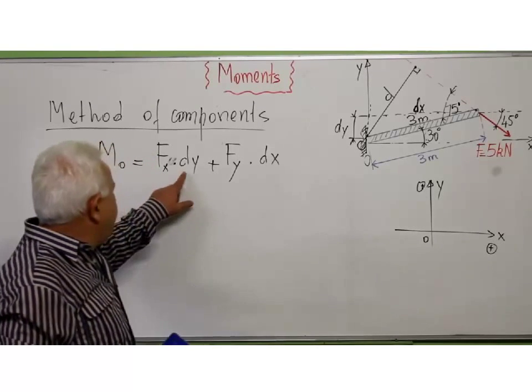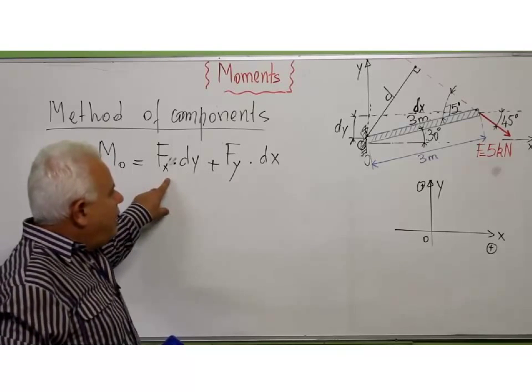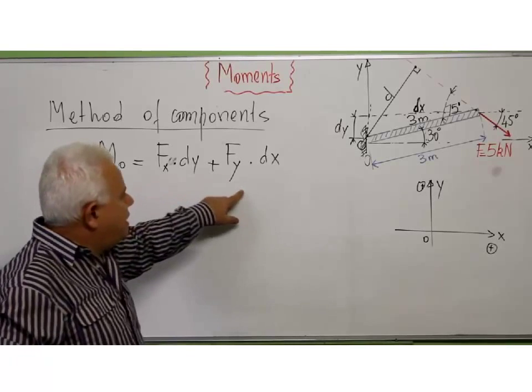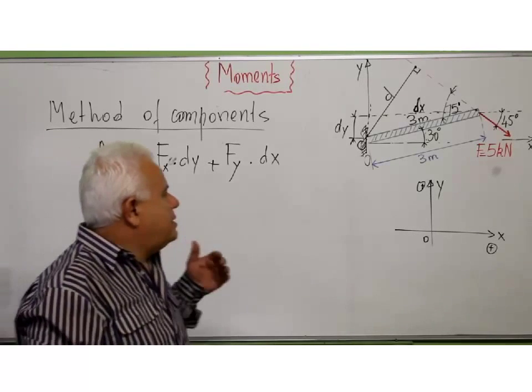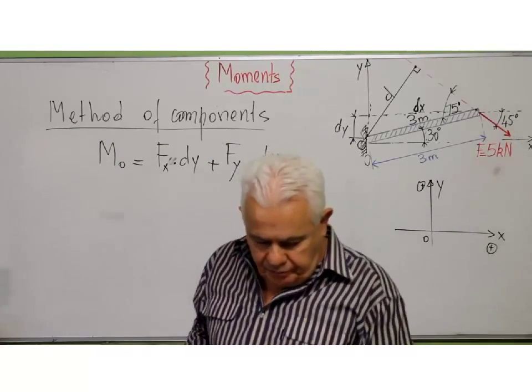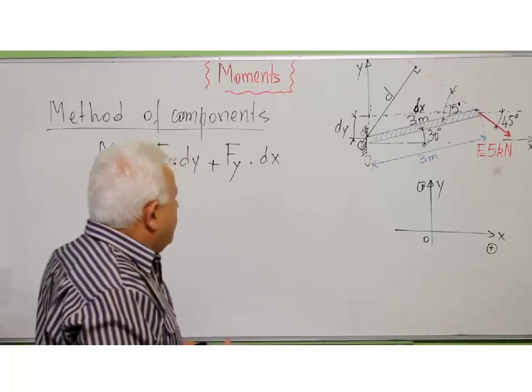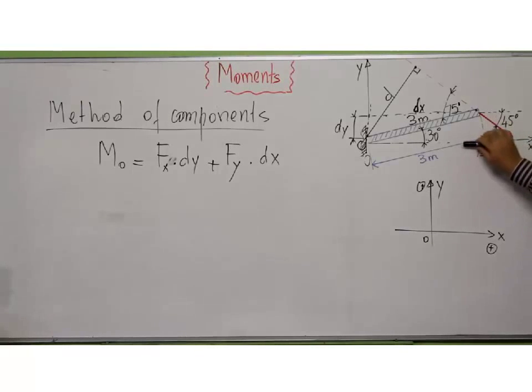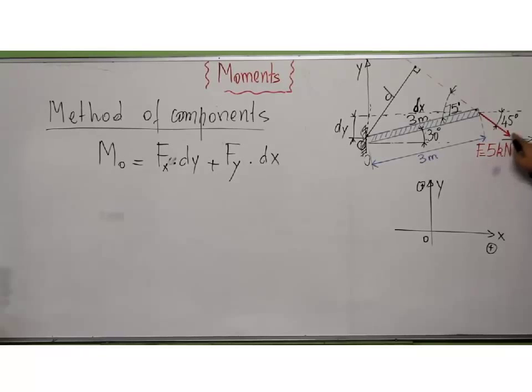Now, I have to, I've got my dx and dy, now I have to find my Fx and Fy. Fx is the component of the force along x. The component of the force along x, the x axis which is parallel to this one, is F equal to 5 times the cosine of 45 degrees. And the vertical component is 5 sin 45.